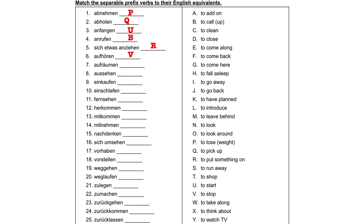Aufhören means to stop. Aufräumen is to clean up. Aussehen is to look, as in the way something looks. Einkaufen is to shop. Einschlafen is to fall asleep, as opposed to just sleep, which is the original verb schlafen. Fernsehen is to watch TV. Herkommen is to come here. Mitkommen is to come with or come along. Mitnehmen is to take along or take with. Nachdenken is to consider or to think about something. Sich umsehen is to look around — usually used reflexively.